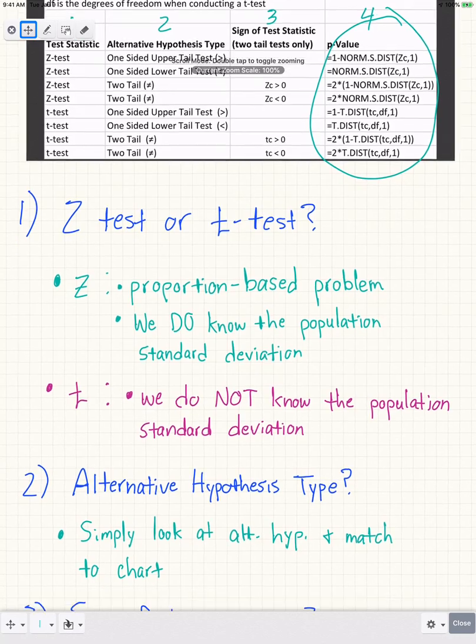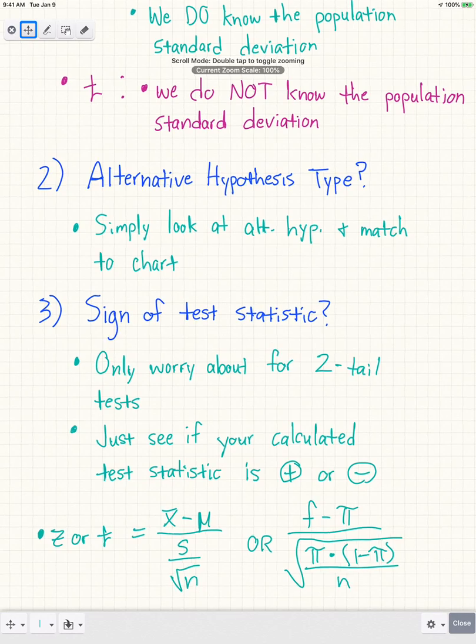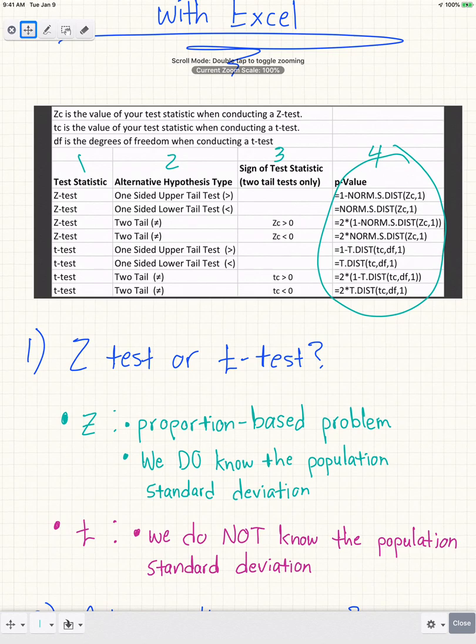That's how you do steps one and two. For step three, we're talking about the sign of the test statistic, which really only matters for two-tailed tests. As you can see in the chart, if we have a one-sided upper-tail or lower-tail test, whether Z or T, you can jump straight into the Excel function to find the p-value.